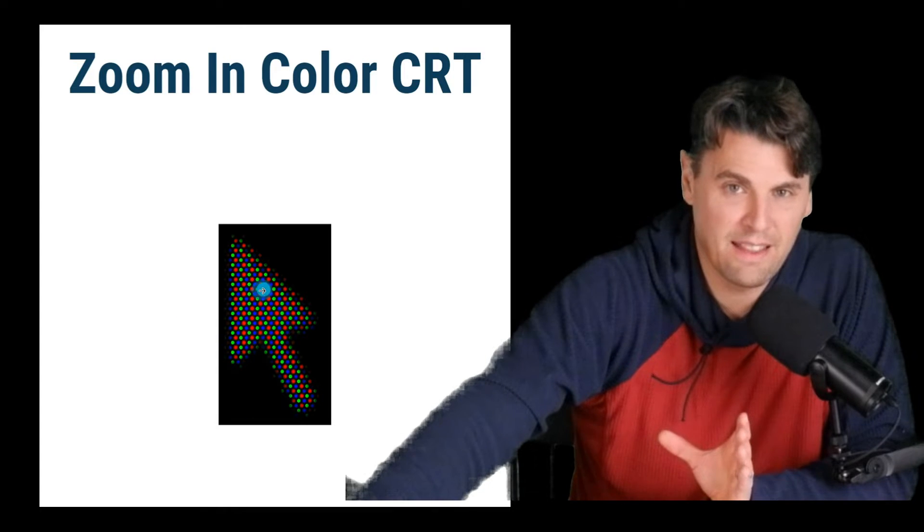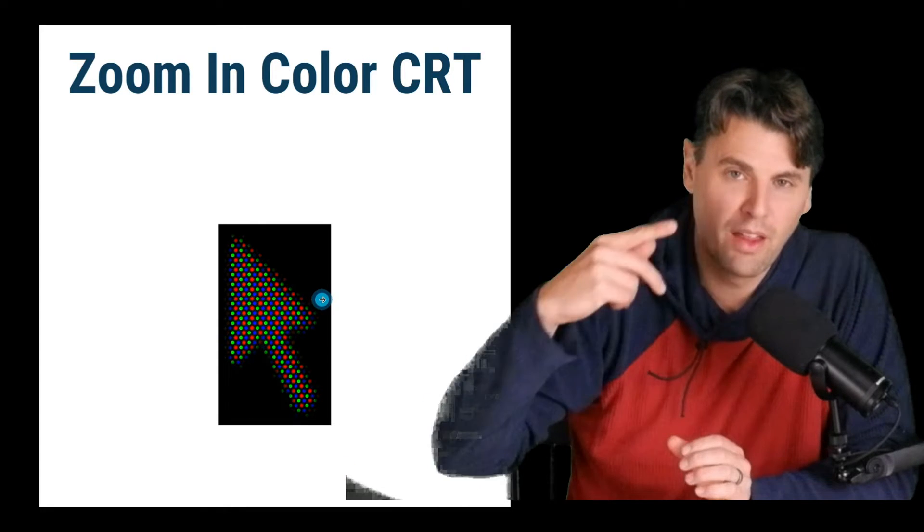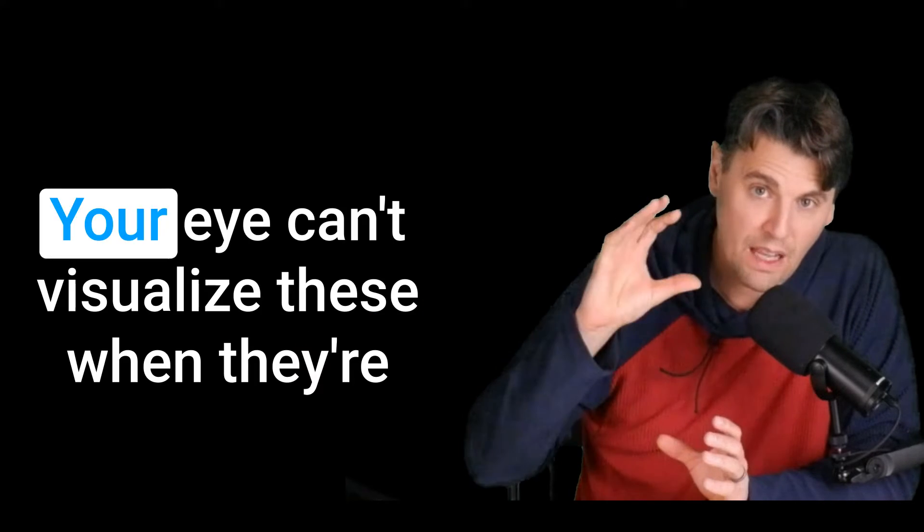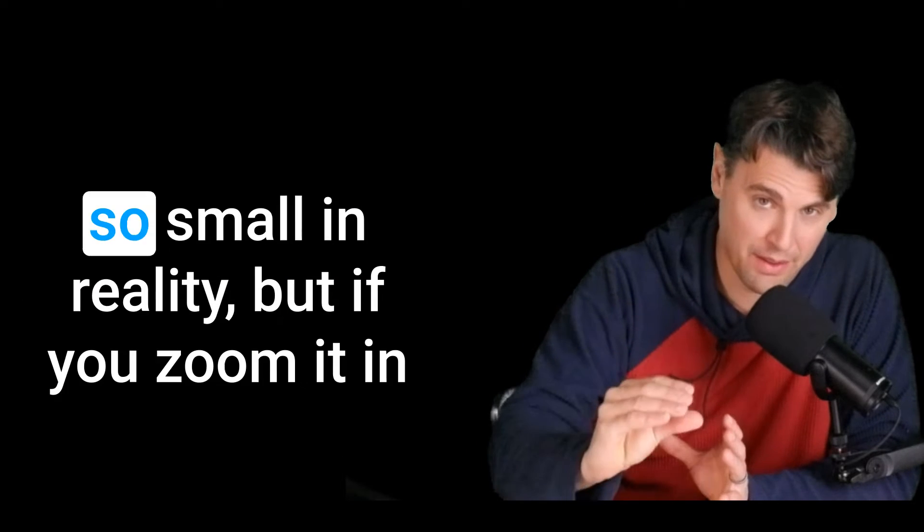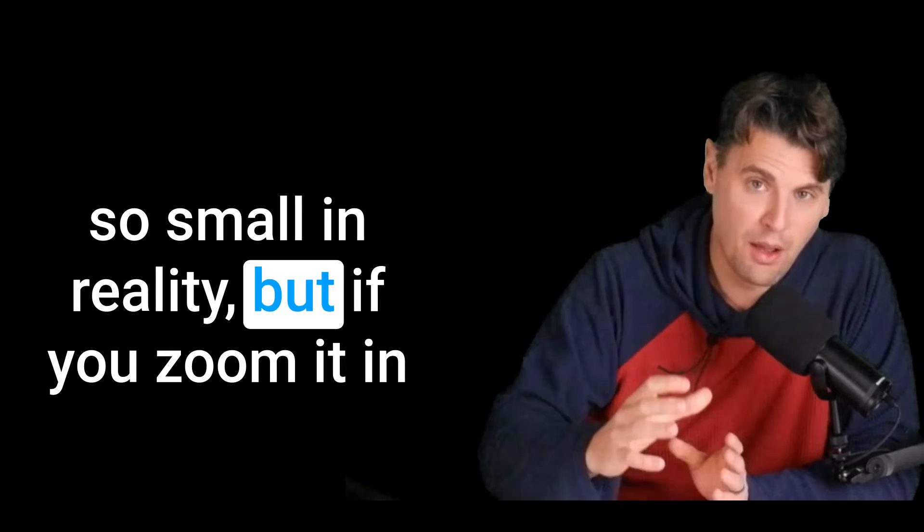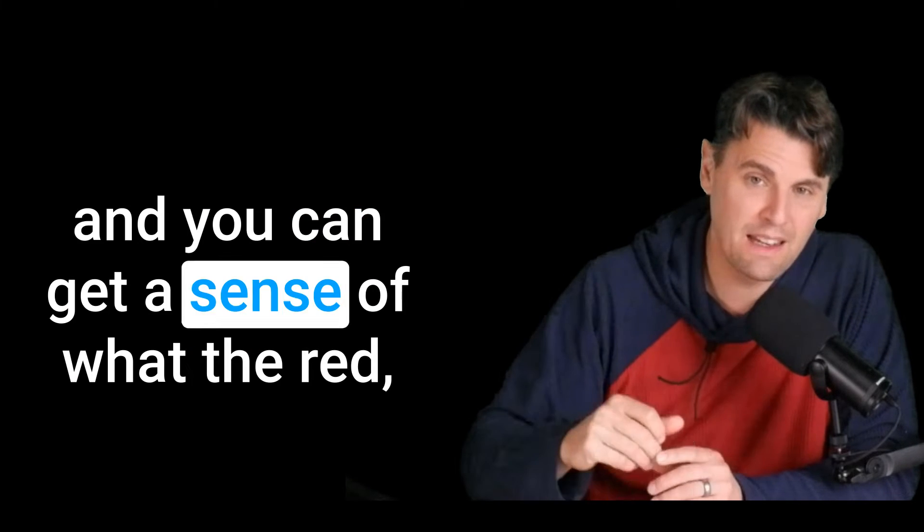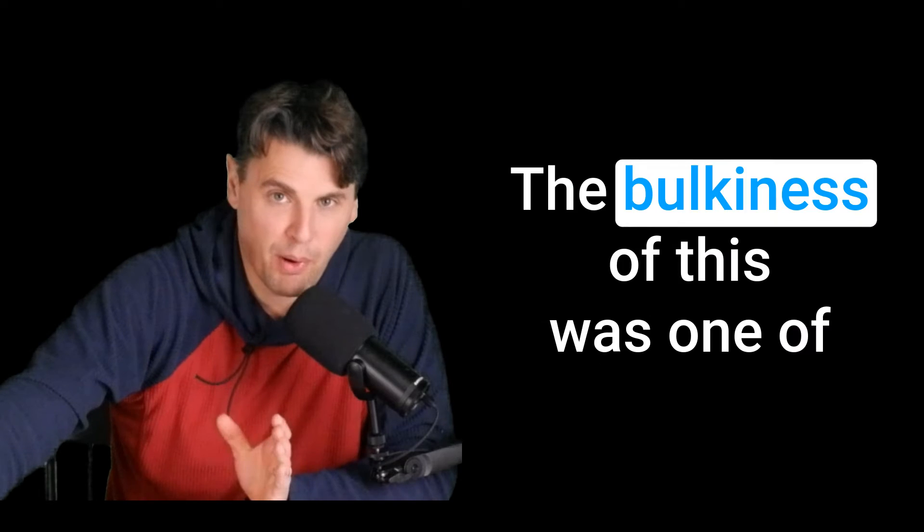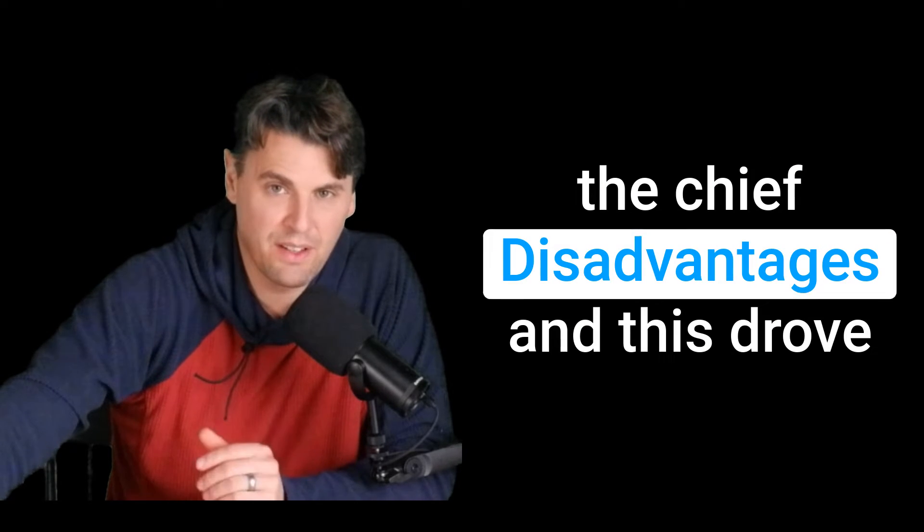This is just a picture of a zoom in to get the idea of these sub pixels where we have red, green, and blue sub pixels all right next to another. Your eye can't visualize these when they're so small in reality, but if you zoom it in, you can get a sense of what the red, green, and blue sub pixels were like on your CRT. The bulkiness of this was one of the chief disadvantages, and this drove in the desire to have a flat panel.